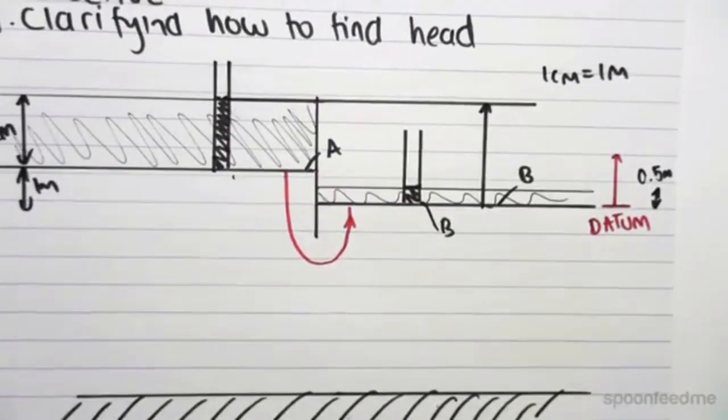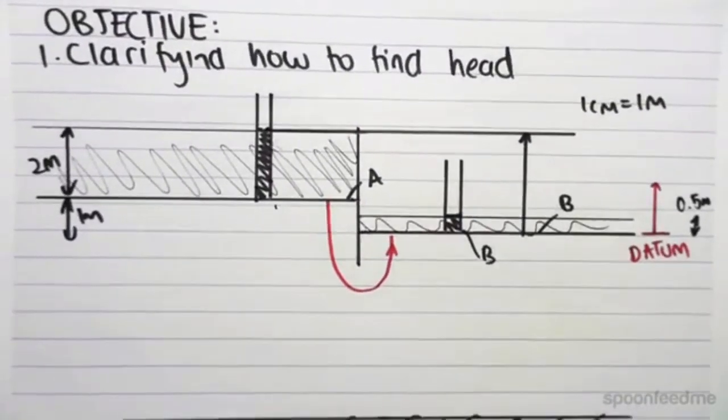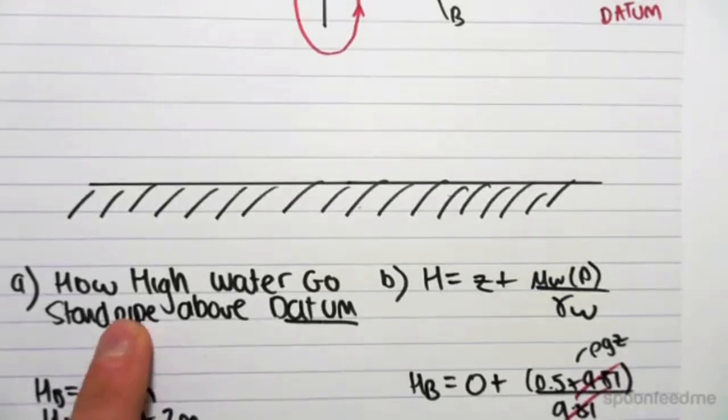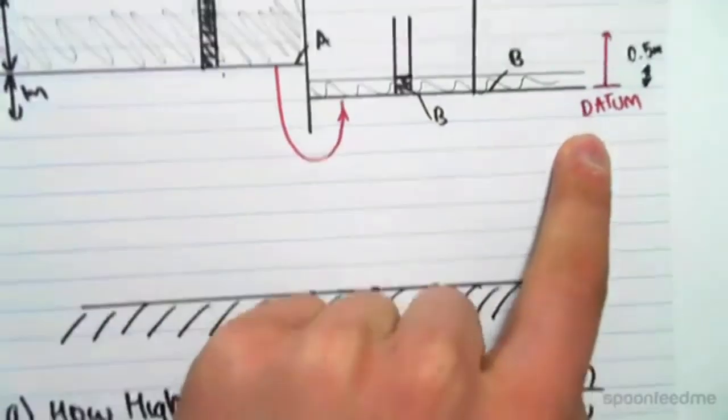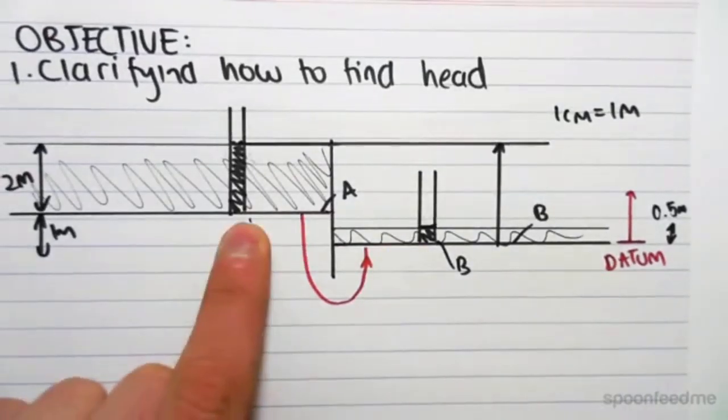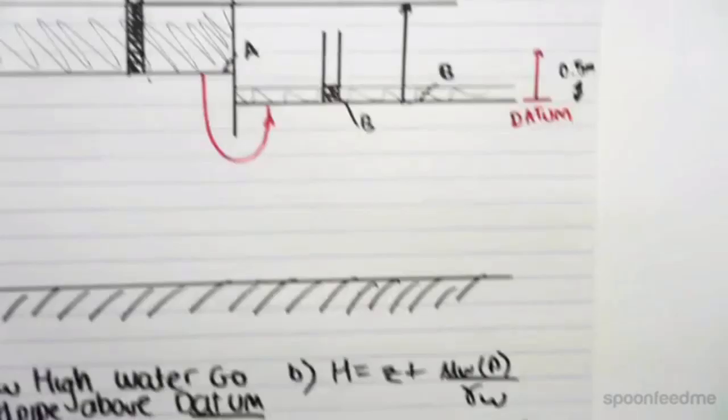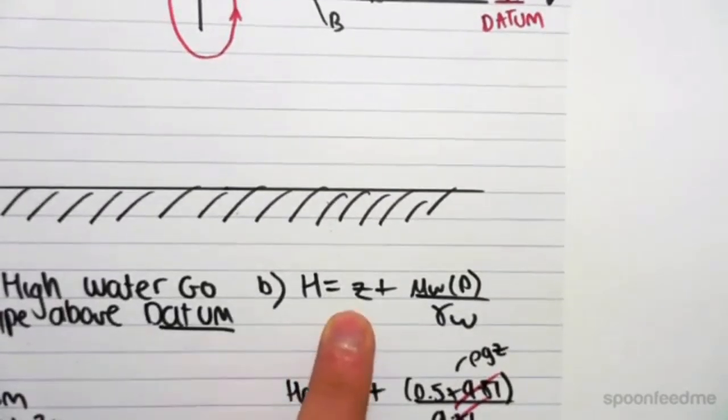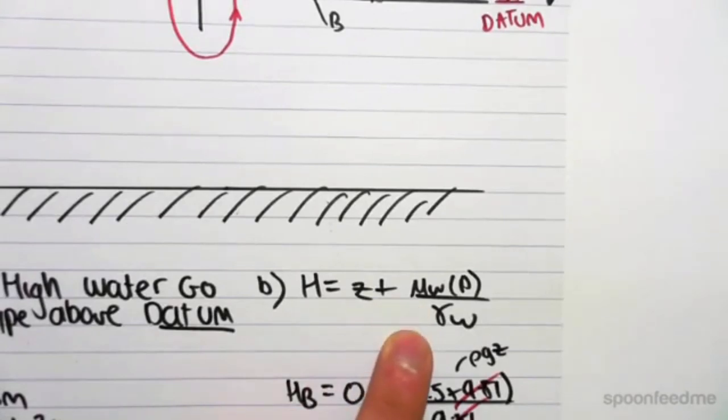So I hope this clarifies how we find head. We can think of finding head in two ways. A, how high the water goes above the datum. Very important, it's the datum, not the surface of which you're at, but the datum. And the second way was using this formula, head equals z plus pore water pressure on the gamma of water.